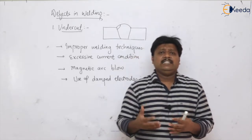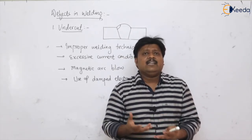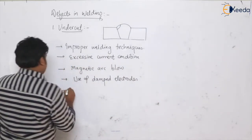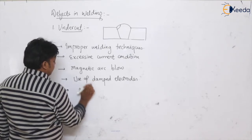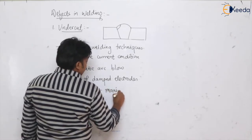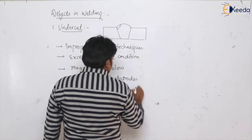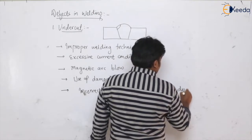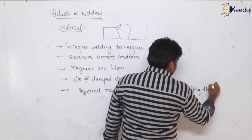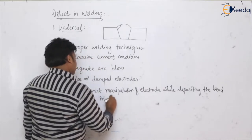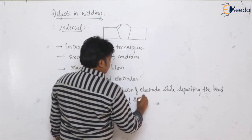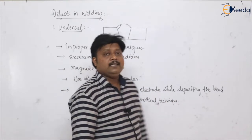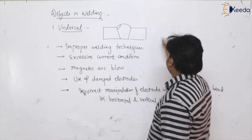This defect is also caused by the incorrect manipulation of the electrode while depositing the bead in horizontal and vertical welding positions. So this is the undercut.